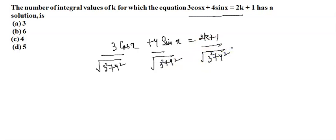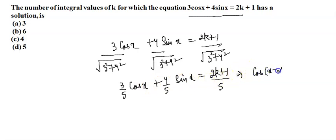So if I divide by 3 squared plus 4 squared, this equation will be like 3/5 cos x plus 4/5 sin x, and this is equal to 2k plus 1 divided by 5. That means this is nothing but we can say this is cos(x minus alpha). This is equal to 2k plus 1 by 5.